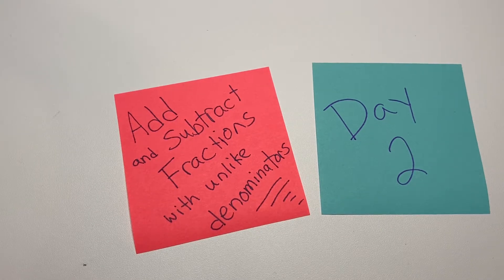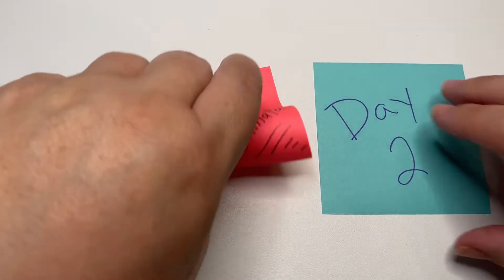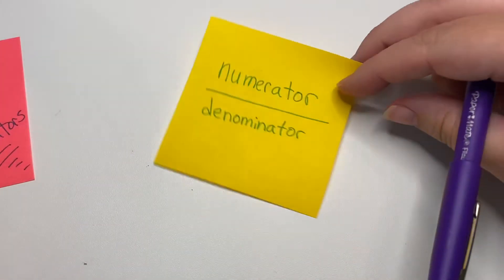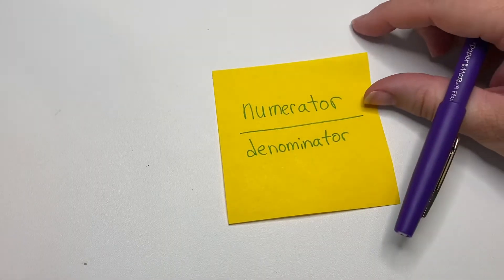Welcome back. This is day two of add and subtract fractions with unlike denominators. And yesterday we reminded ourselves that a fraction has a numerator, the number on top, and a denominator, the number on bottom.